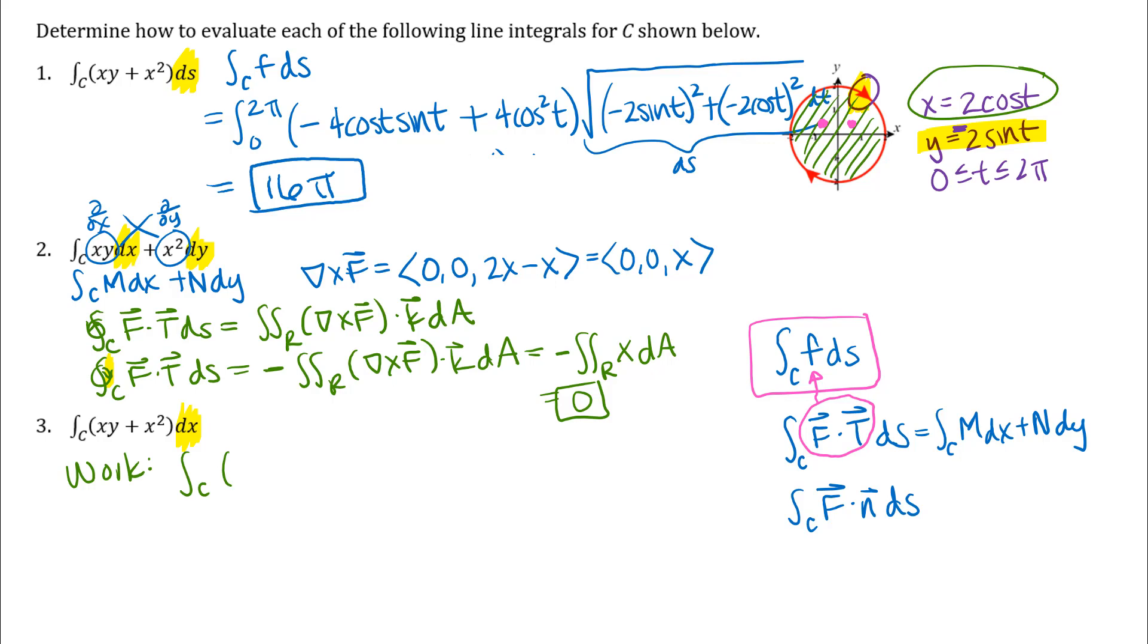So the way you would think about that as a work integral you could think about this is the m dx plus n dy form just with the n being zero and so you could use Green's theorem like that. You could also think about this as a flux integral and so the flux integral is plus or minus depending on the correct orientation of the curve so we would need to think about that here.